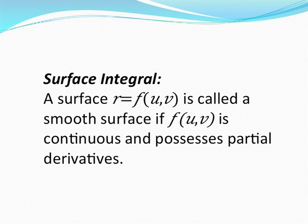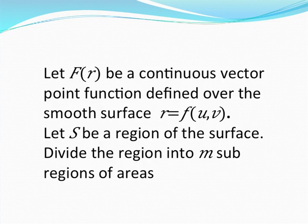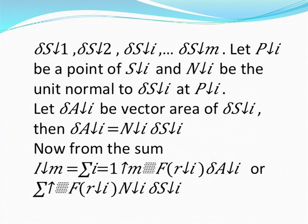Surface integral: a surface r equals f(u, v) is called a smooth surface if f(u, v) is continuous and possesses partial derivatives. Let f(r) be a continuous vector point function defined over the smooth surface r equals f(u, v). Let s be a region of the surface divided into m sub-regions delta s1, delta s2, ..., delta s-m. Let p-i be a point of s-i and n-i be the unit normal to delta s-i at p-i.